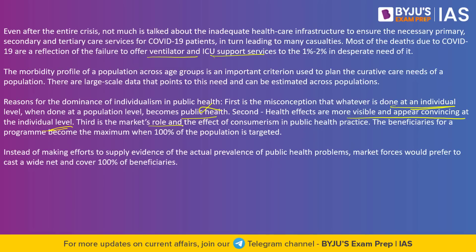There are companies worth billions of dollars in the pharmaceutical field. For them, it is always preferable if the government launches a policy for everyone — free healthcare for everyone, free hospitalization for everyone. They want everyone covered. While the government's priority should be to cover that population first which is most in need. That is why the interference of private sector companies plays a big role — they want all people targeted, while public health responsibility is to target those at greater risk first.